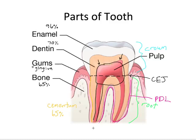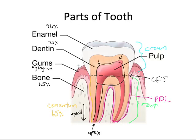The tip of the root is called the apex. In terms of direction, something located toward the apex is in the apical direction, whereas moving toward the top of the crown is called the coronal direction.